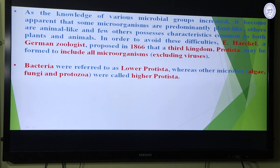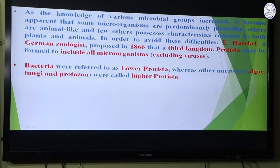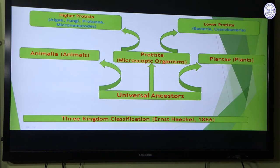As knowledge of various microbial groups increased, it became apparent that some microorganisms are predominantly plant-like, some are animal-like, and a few share characteristics common to both. To resolve these problems, German zoologist Ernst Haeckel in 1866 proposed a third kingdom — Protista — to include all microorganisms excluding viruses. Bacteria were referred to as lower protista, whereas other microbes such as algae, fungi, and protozoa were called higher protista.